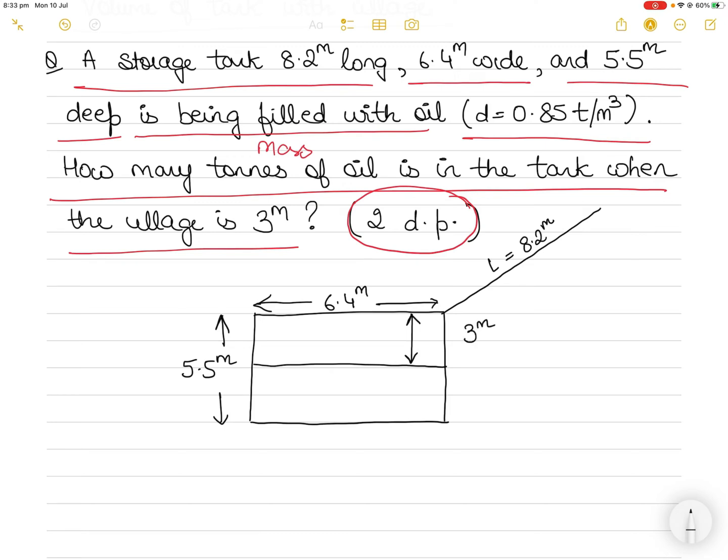So 3 meters is unoccupied. It's empty. 3 meters of height. You are only filling the remaining height which is 5.5 meters minus 3 meters. So total height is 5.5 meters and the empty height is 3 meters. So the remaining height is 2.5 meters. That is up to which you are filling the oil.